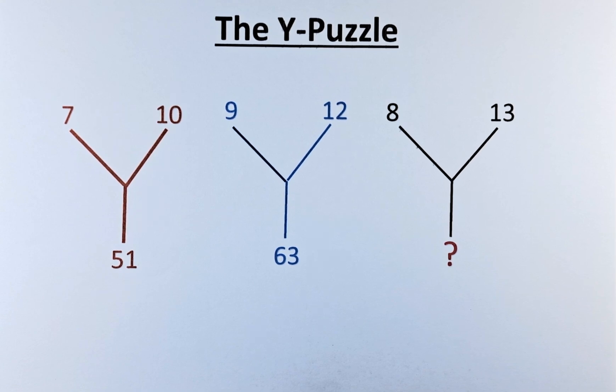In the brown Y, the numbers are 7, 10 and 51. In the blue Y, we have 9, 12 and 63. And in the black Y, we have 8, 13 and a question mark.